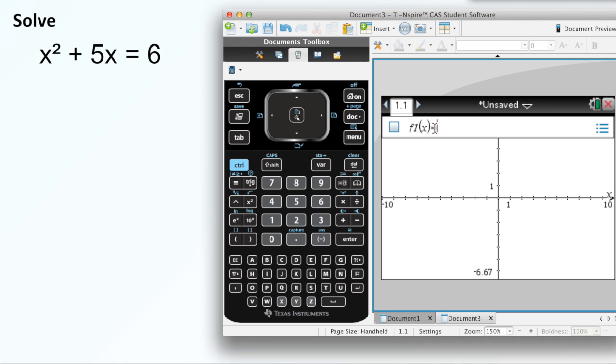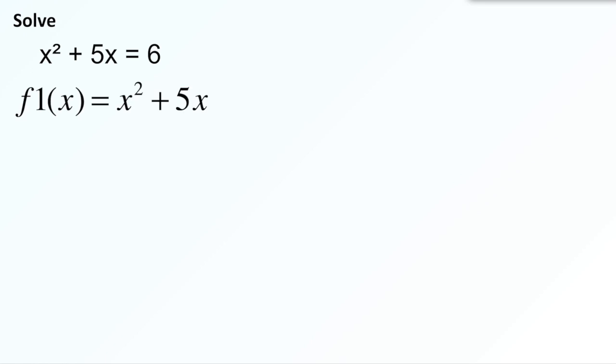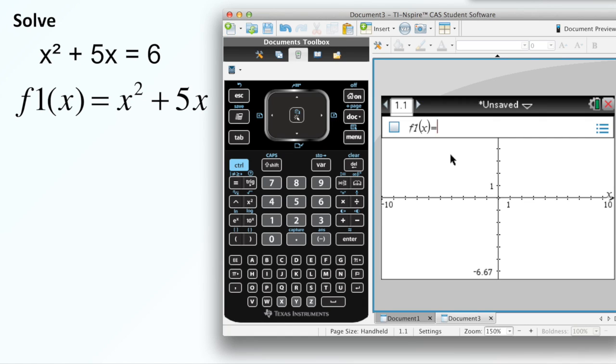So F1 of X. We're going to have two separate equations here that we're going to be looking for the intersection point. So this equation is going to be our first one. We're going to basically divide this into two sides here. This is our F1 of X is X squared plus 5X. I'm just going to type that in here.